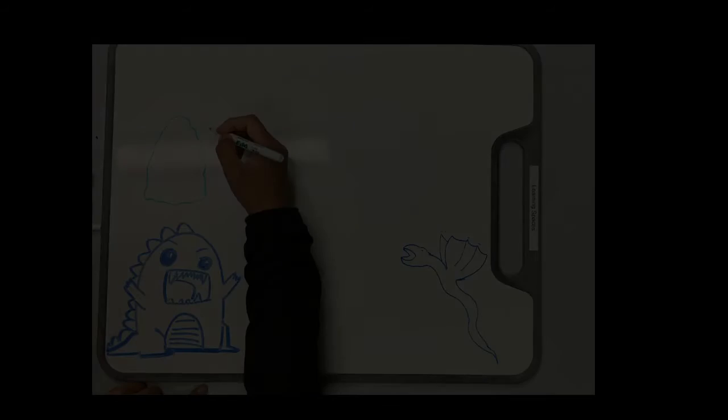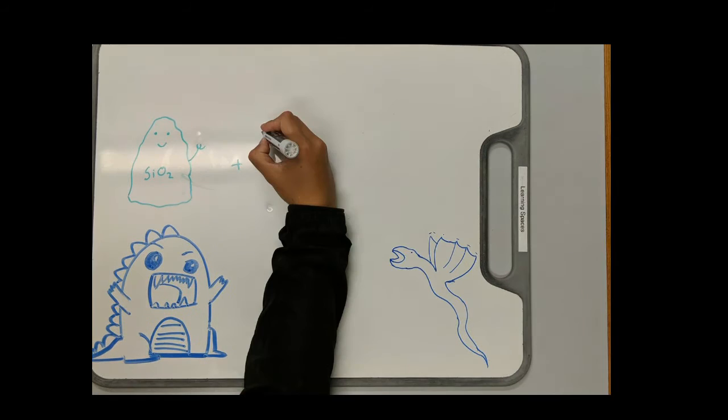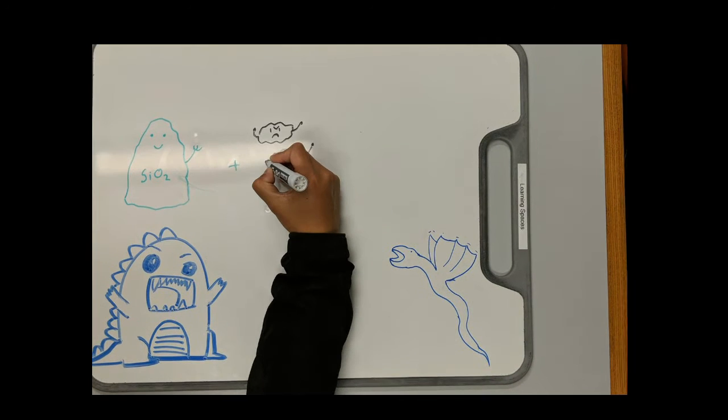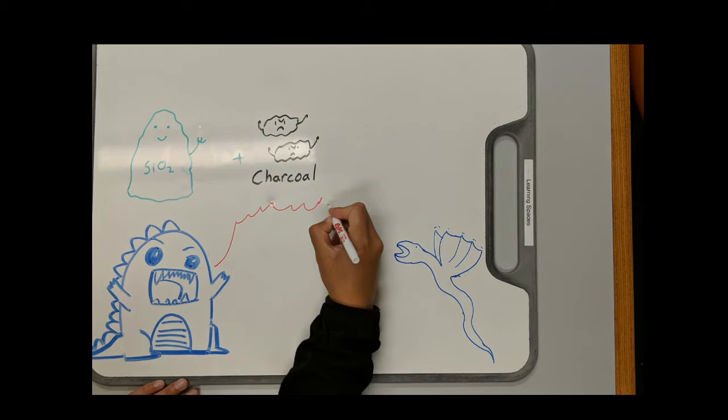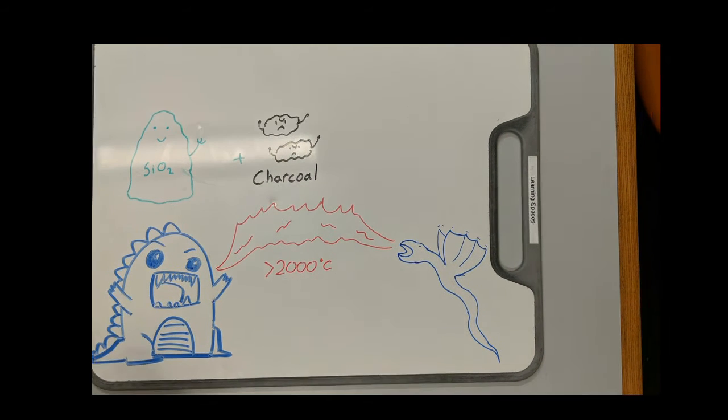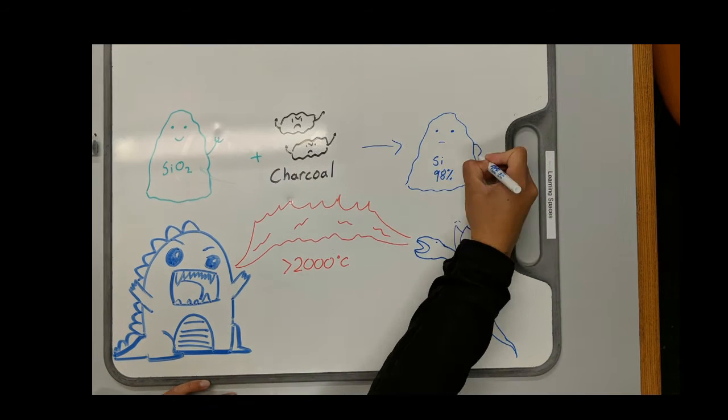There are two standard cleaning procedures. The first process utilizes charcoal and high temperatures upwards of 2,000 degrees Celsius to abstract impurities and oxygen from silicon dioxide. The resulting silicon is of 98% purity.